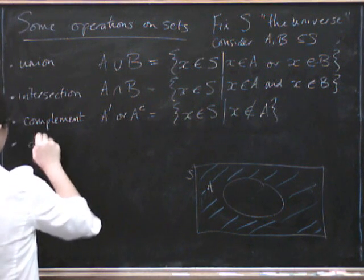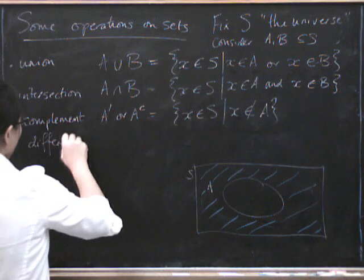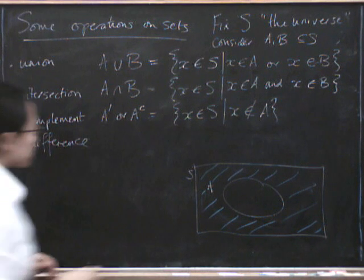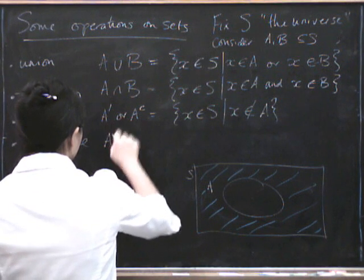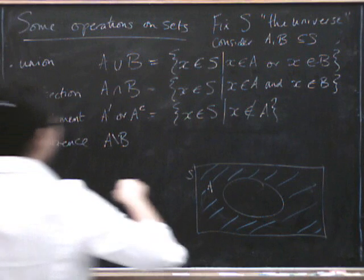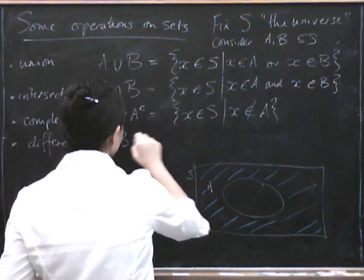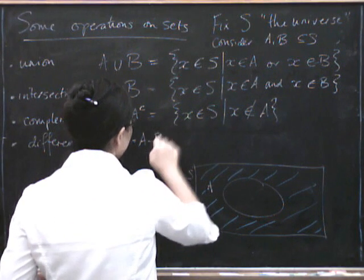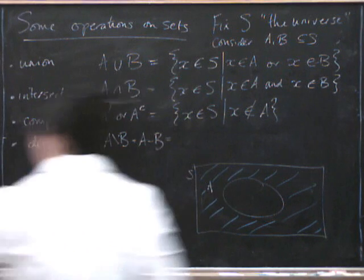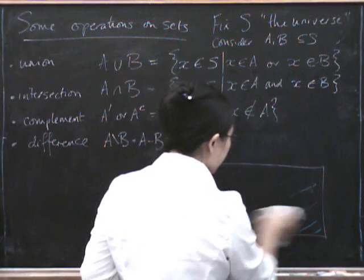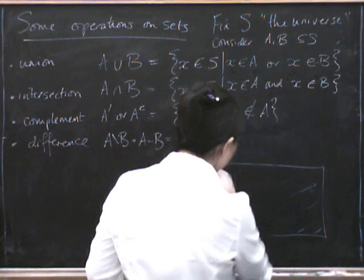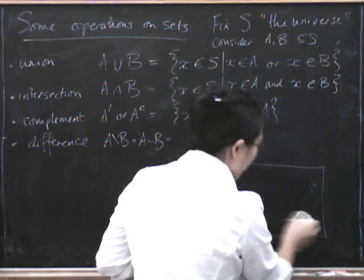Right. So here's another kind of operation we can do on sets. We can take the difference. So we can take, that's written A with a slash going that way, or A minus B, and that is, okay, I need another picture now, don't I? It's everything in A that isn't in B. Ooh, the blue is quite, it's quite fearsome. It doesn't want to be rubbed off.